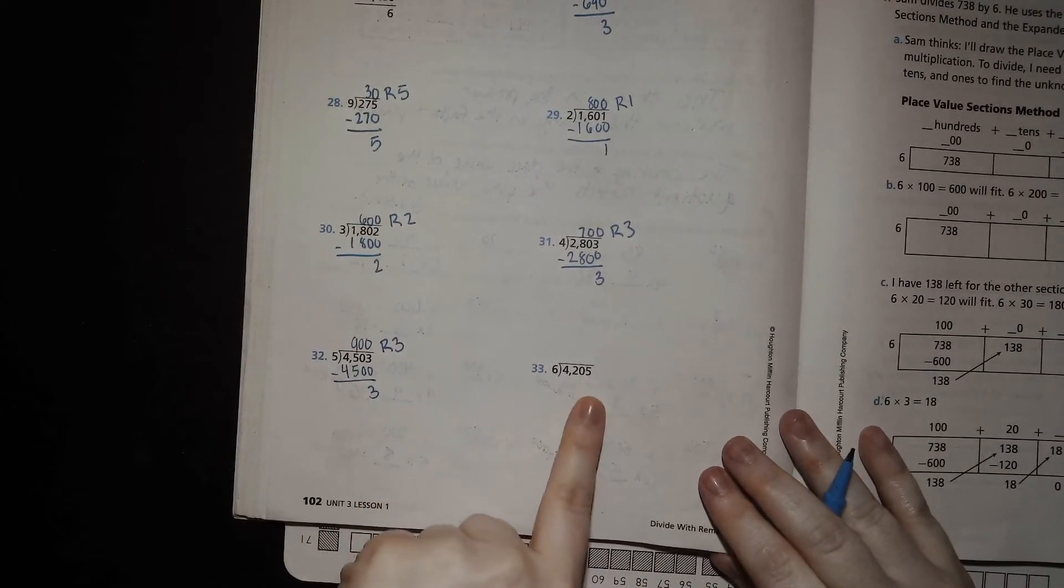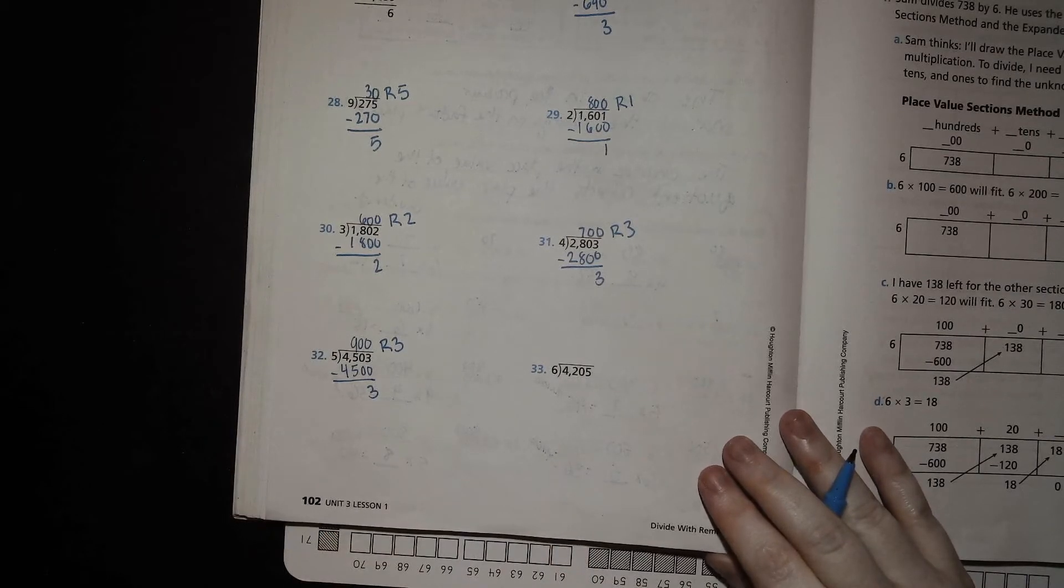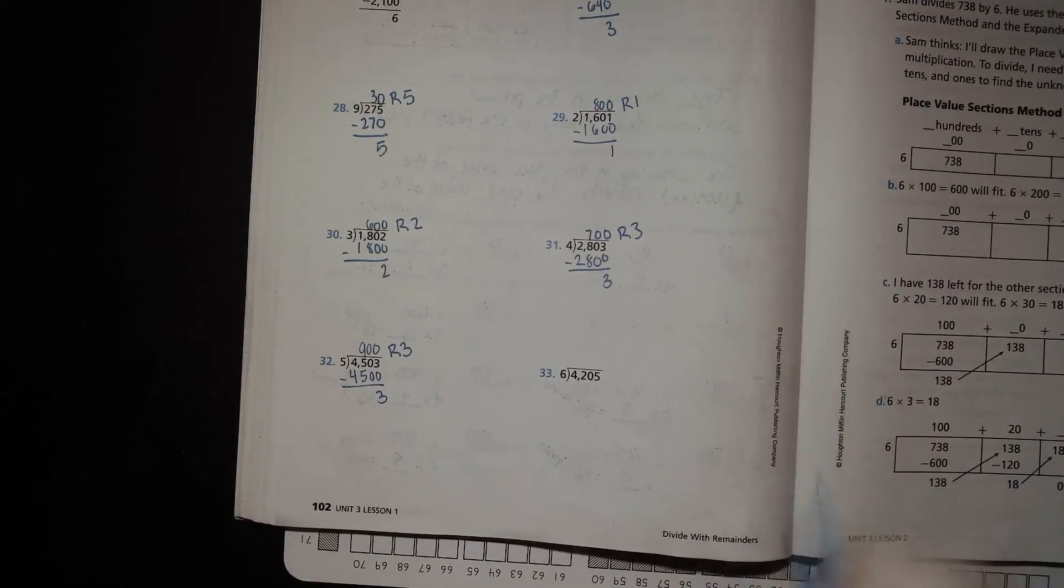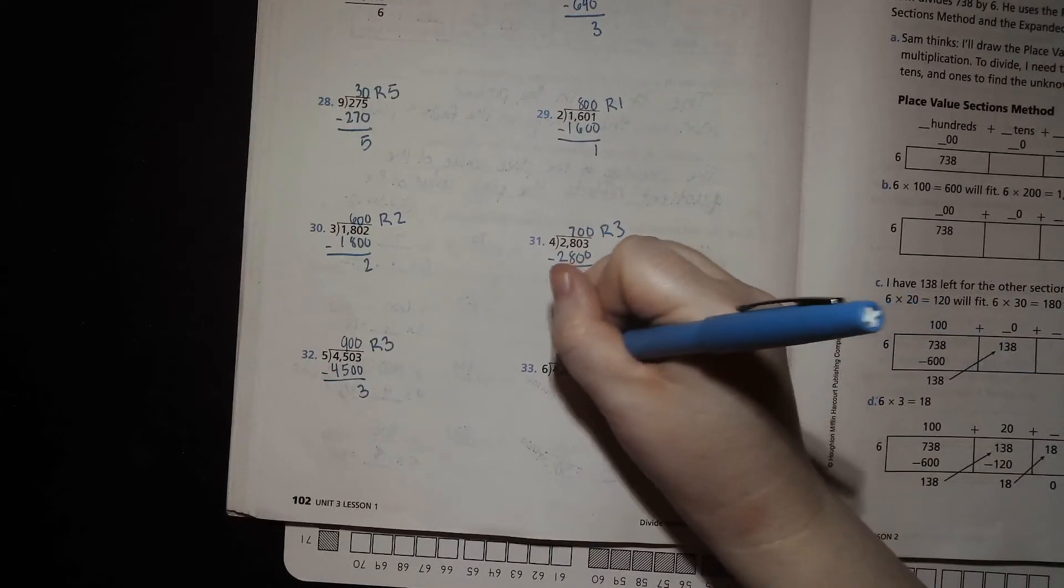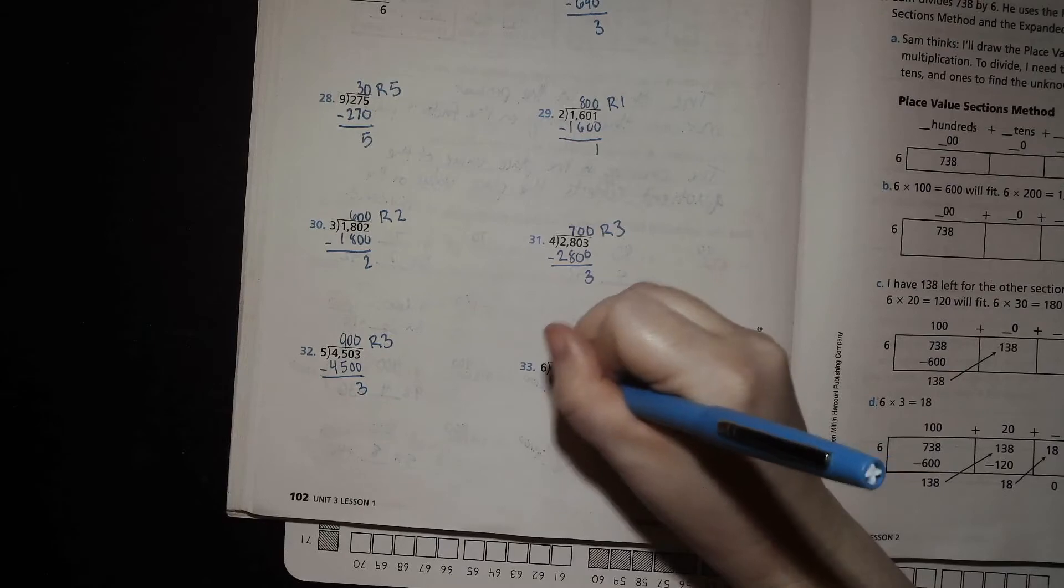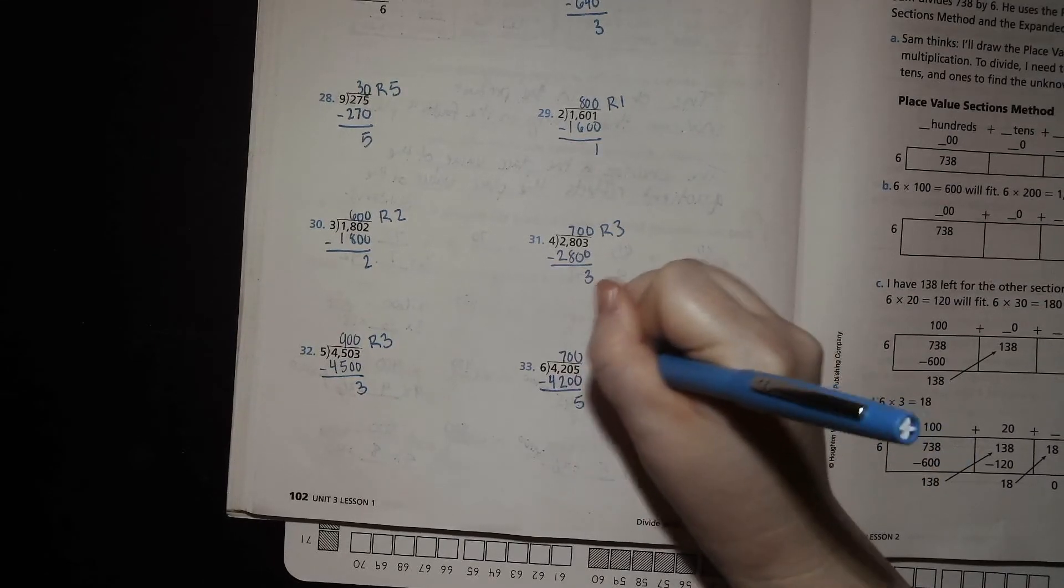4,205 divided by 6. Well, 6 times what is 42? 6 times 7 is 42. So 6 times what is 4200? 4200 minus, you have 5 left over. Remainder 5.